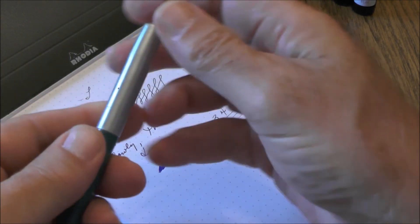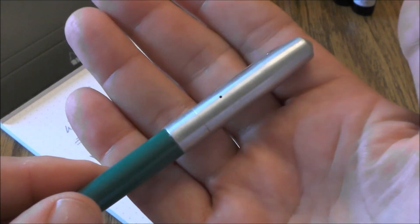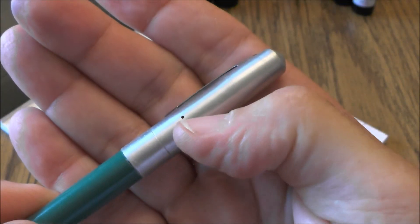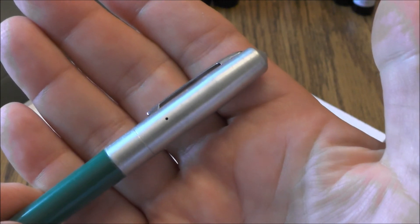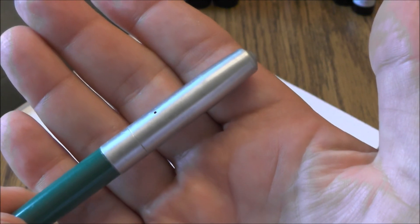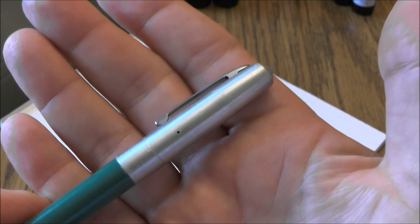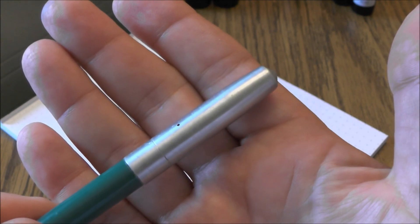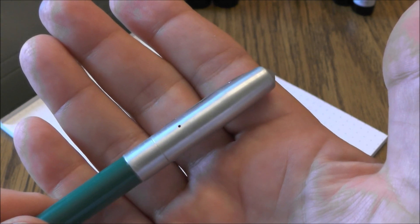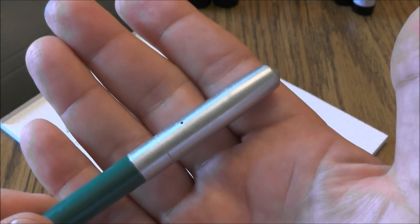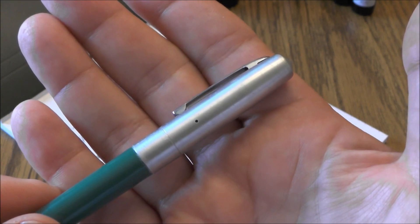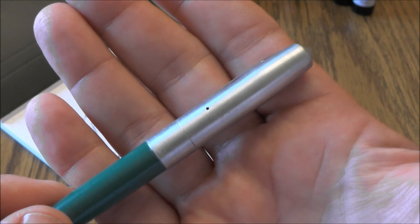And one thing I have noticed that I've never noticed on any other pen is that hole right there. You can see through it. It's like a breather hole. So I guess that has something to do with pressure inside the pen. But anybody that knows for sure, make a comment below and say why you think that hole is there.